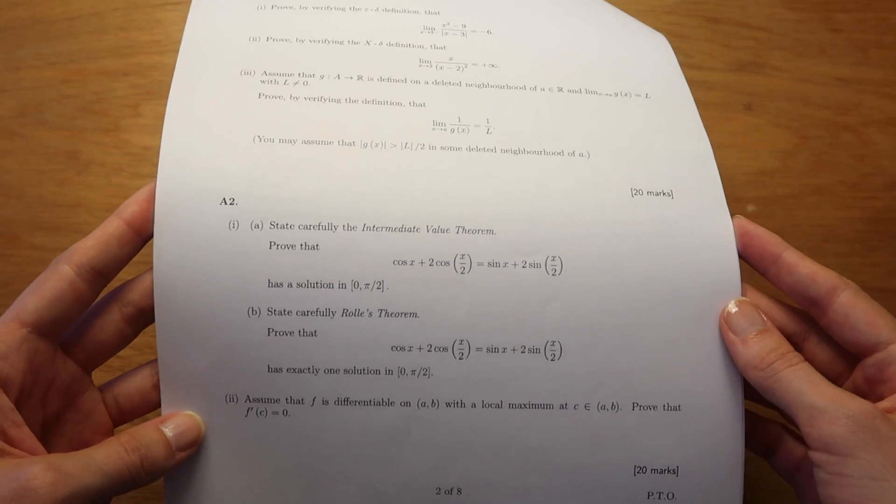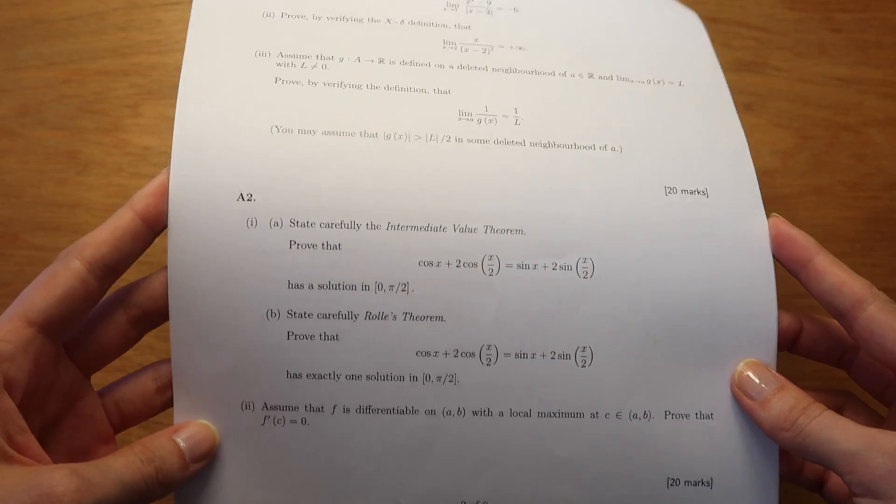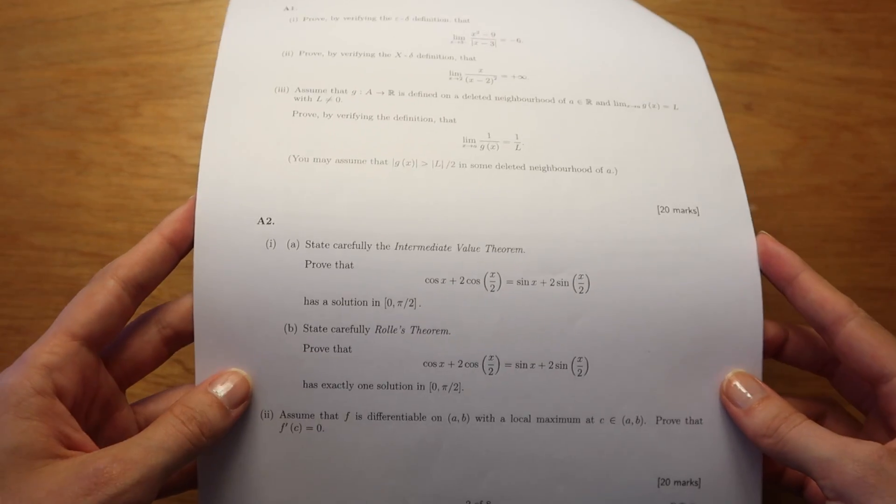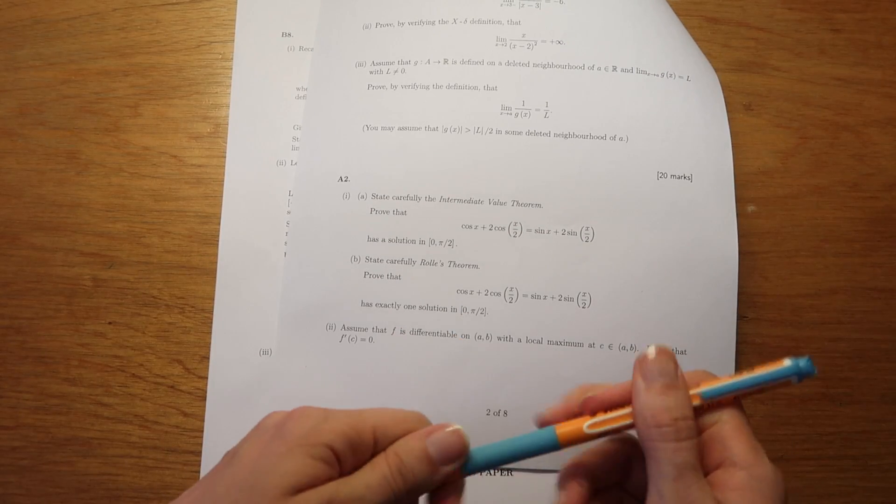Next we have the intermediate value theorem. Now the intermediate value theorem talks about if you have two points connected by a continuous curve, you can actually draw what we're working with here.